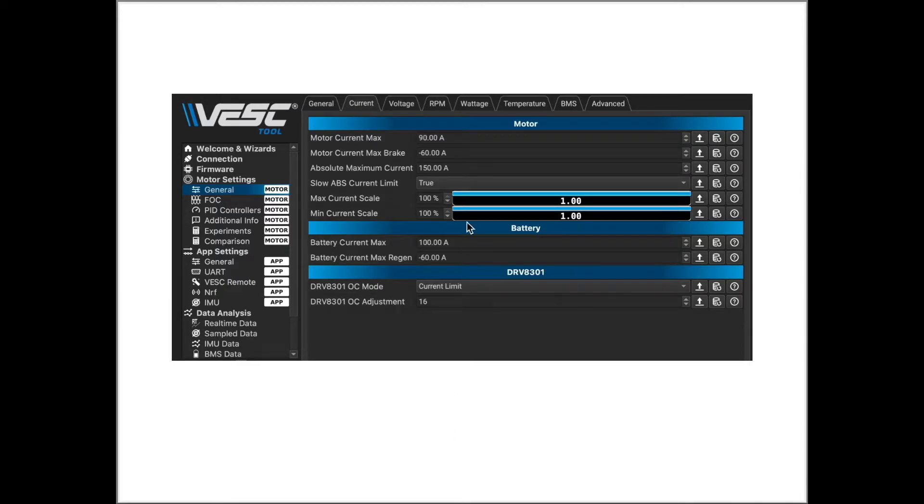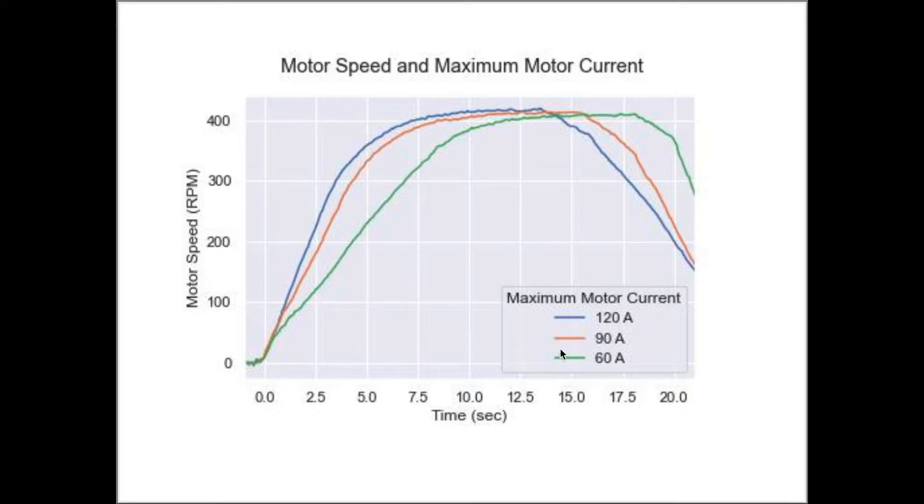This video will demonstrate how higher and lower motor current limits affect the speed and acceleration of an electric bicycle. We'll show that increasing the motor current limit leads to a higher initial acceleration.